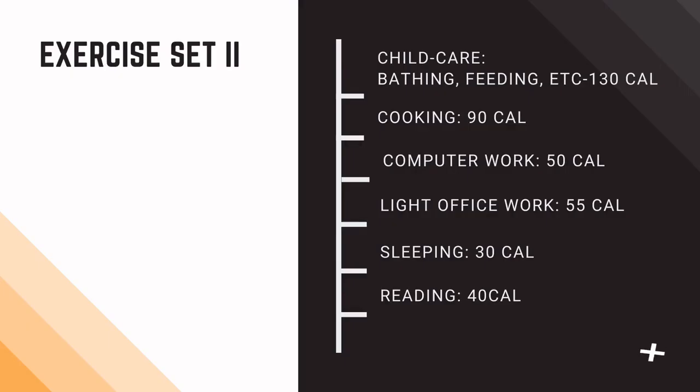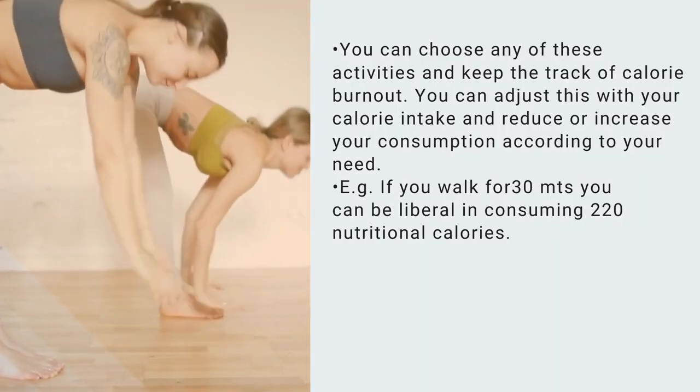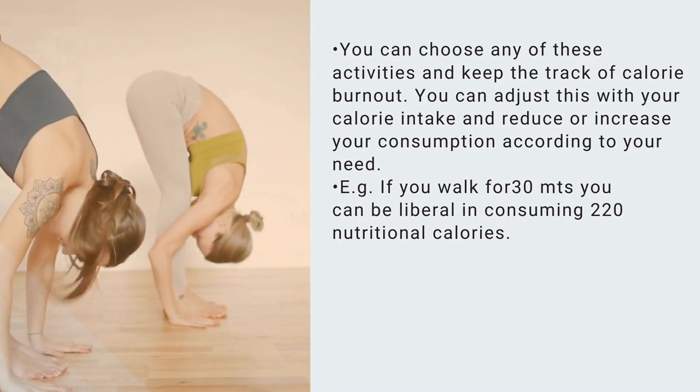Stationary bicycling, walking or jogging burns 220 calories in 30 minutes, and dancing burns 205 calories. If you're not fond of workouts, even day-to-day activities help you burn calories. Childcare, bathing, and feeding burns about 130 calories in 30 minutes, cooking 90 calories, computer work 50 calories, light office work 55 calories, sleeping 30 calories, and reading 40 calories.